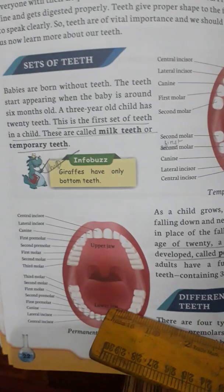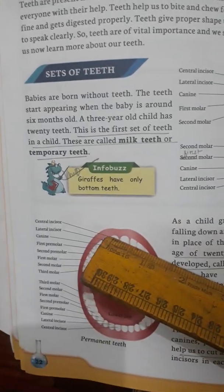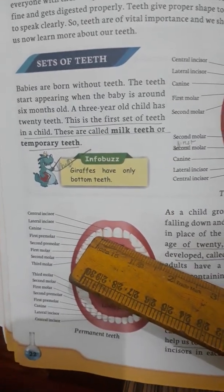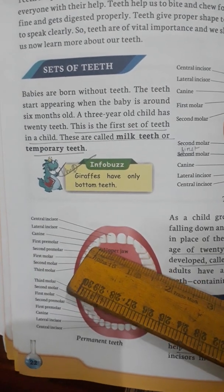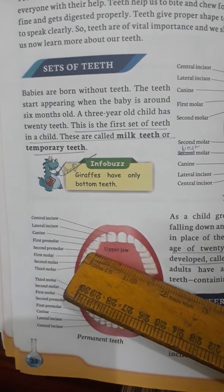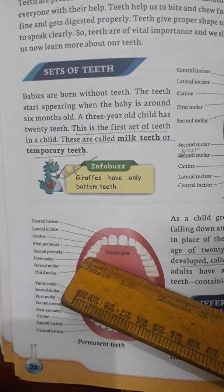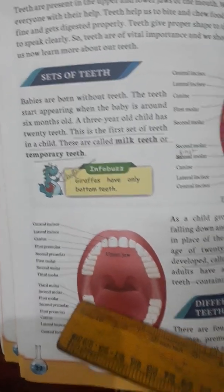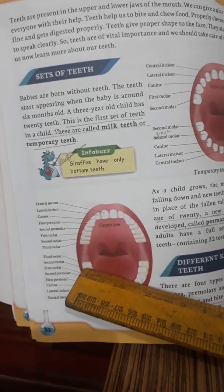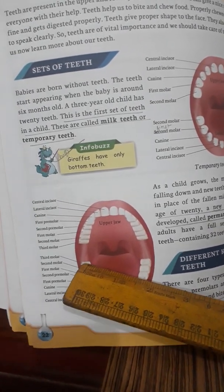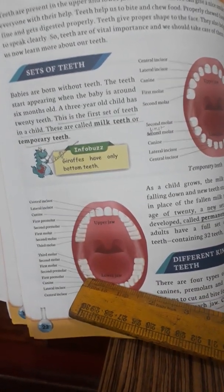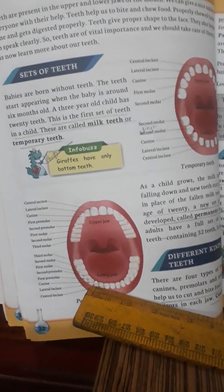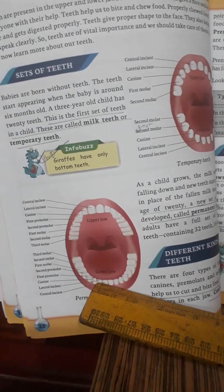You can see the diagram of permanent teeth here. In the upper jaw: central incisor, lateral incisor, canine, first premolar, second premolar, first molar, second molar, third molar. In the lower jaw: third molar, second molar, first molar, second premolar, first premolar, canine, lateral incisor, and central incisor.